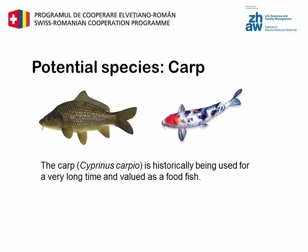The carp, Cyprinus carpio, has historically been used for a very long time and is valued as an edible fish. Traditional fish farming in Europe is primarily based on carp. In Asia, colored breeds of carp have emerged, commonly known as koi carp, and are traded as pets. The advantages of carp are that it is a relatively robust and fast-growing fish. It is omnivorous and can consume a wide range of food, including vegetable feeds. Furthermore, they can grow both in warm and cold water, so they can be kept outside.